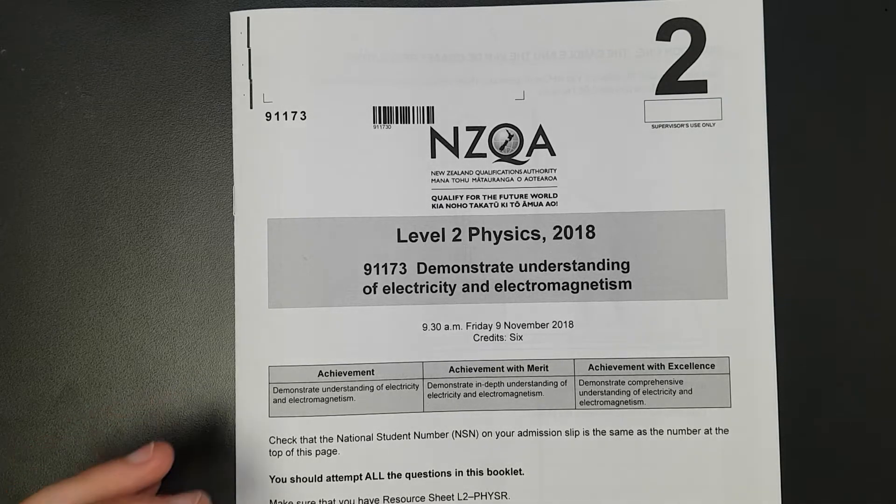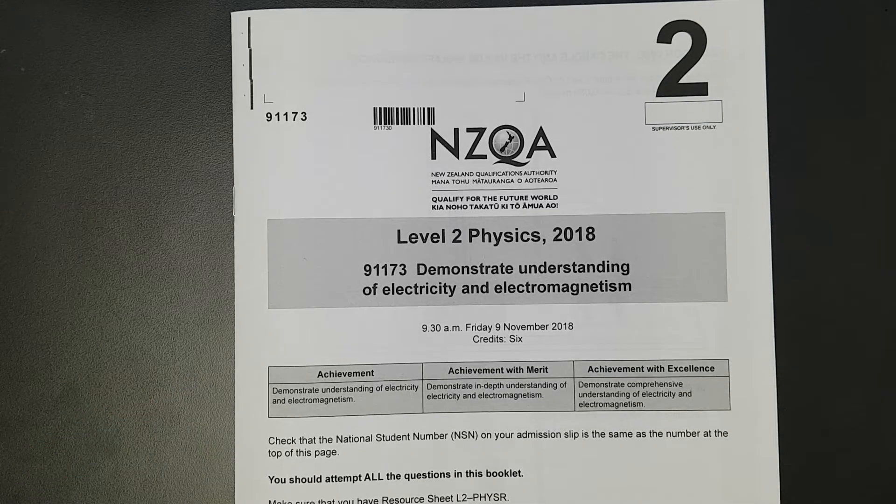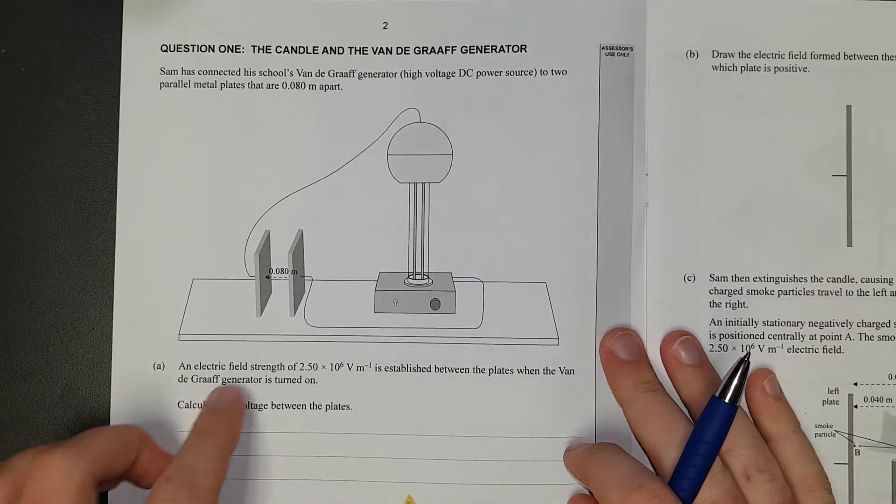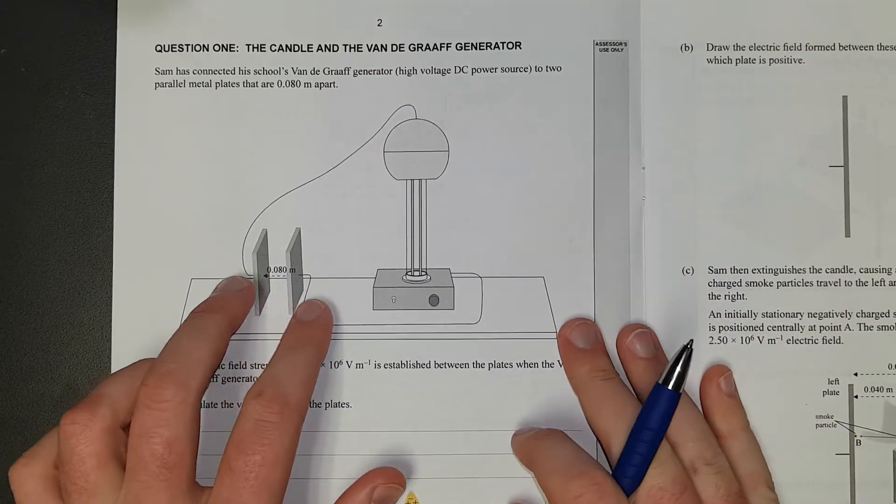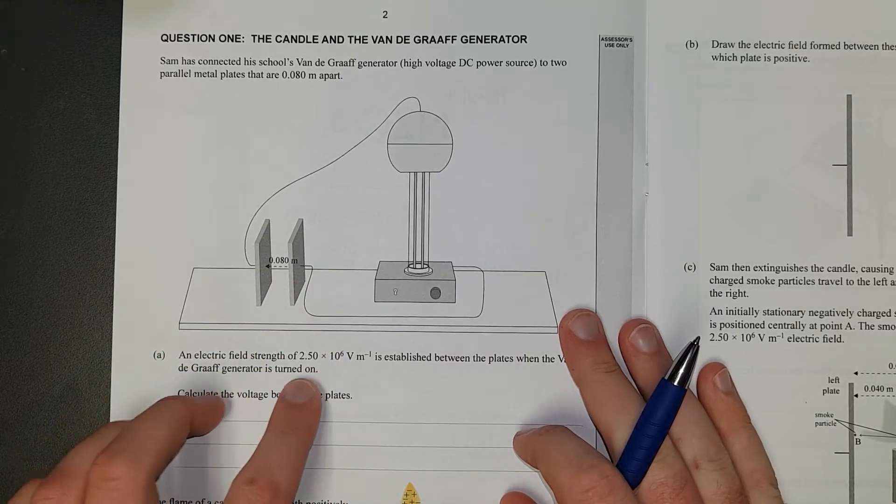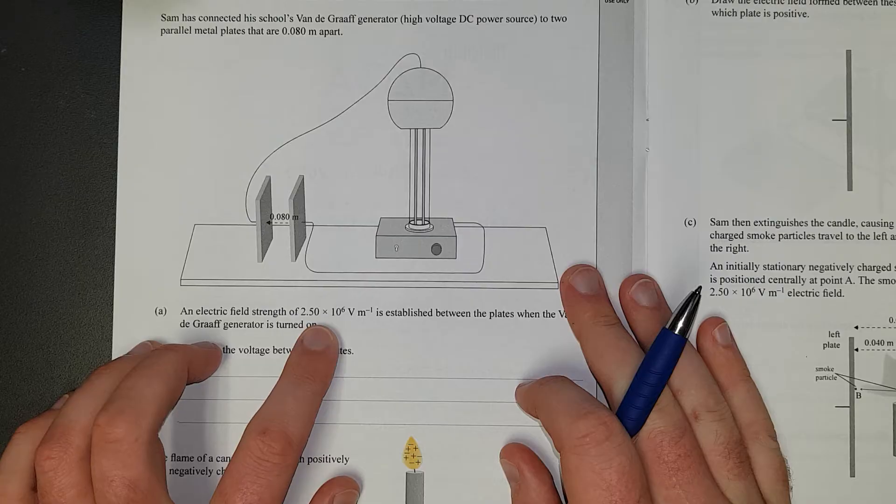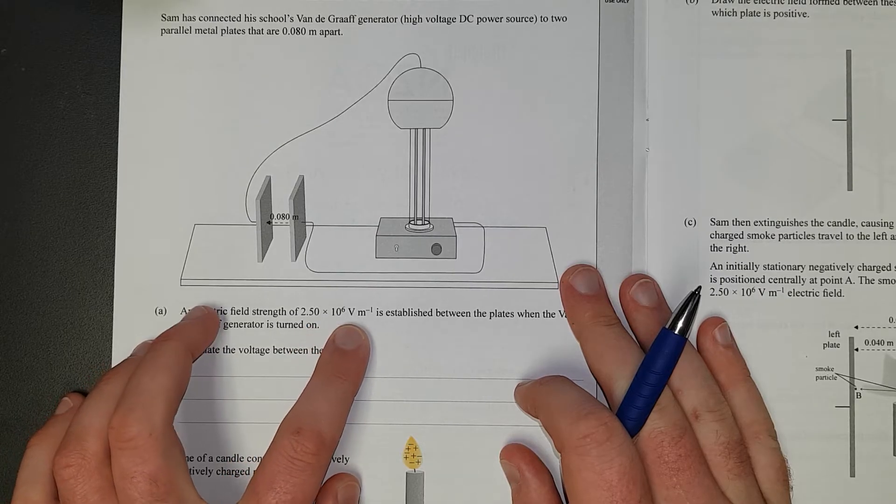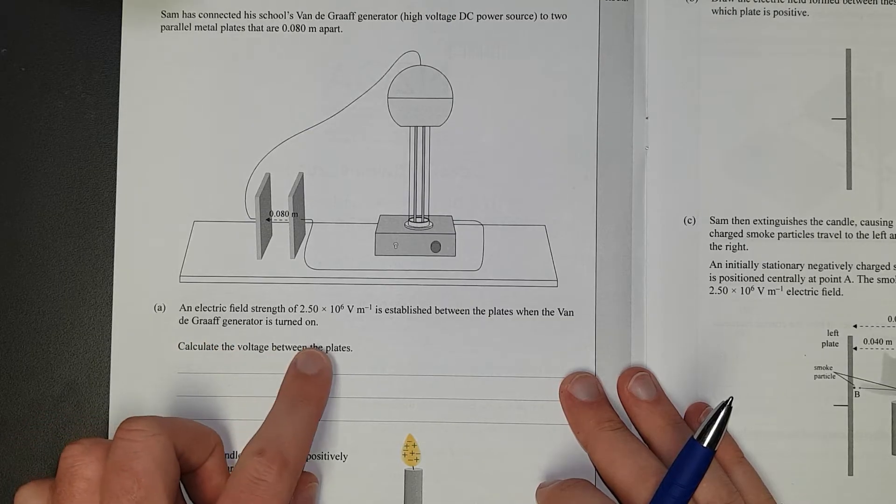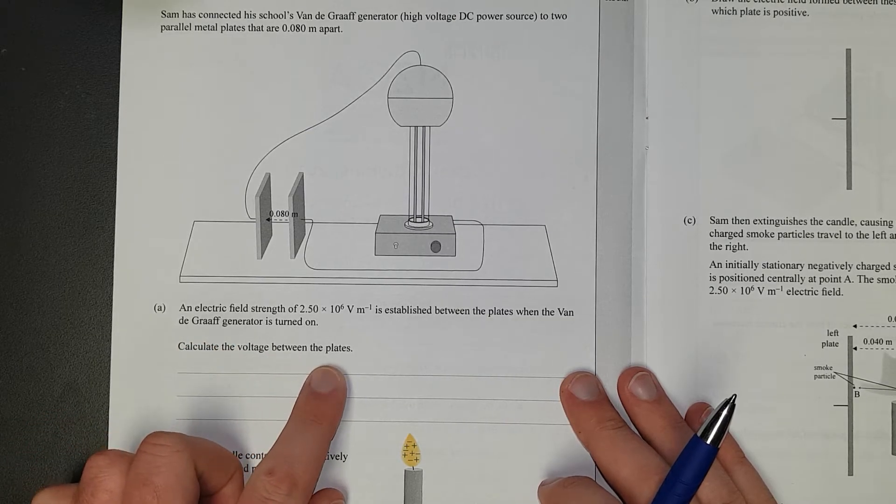For this video, I'll be working through the Level 2 2018 electricity exam. Question 1. Got a Van de Graaff, got two plates set up, like a sort of capacitor sort of thing. It has an electric field strength of 2.5 times 10 to the 6 volts per meter, established between the plates when the Van de Graaff is turned on. Calculate the voltage between the plates.